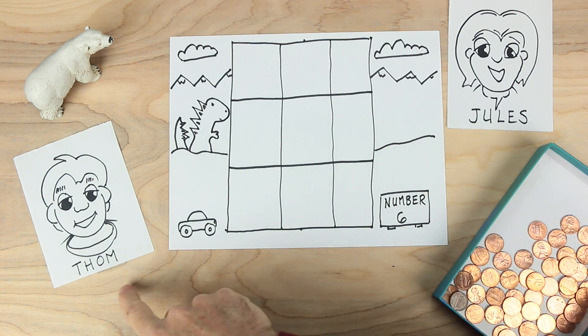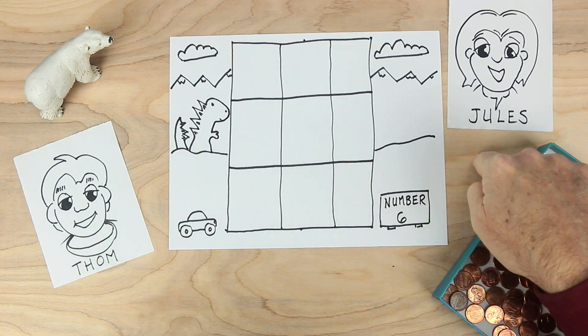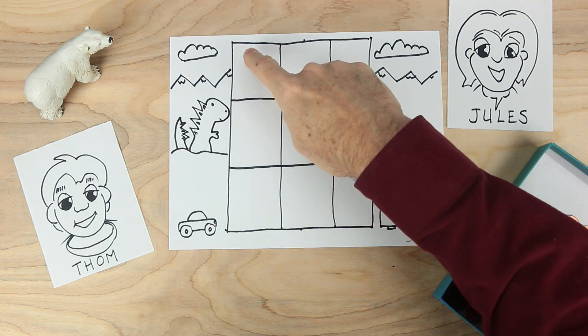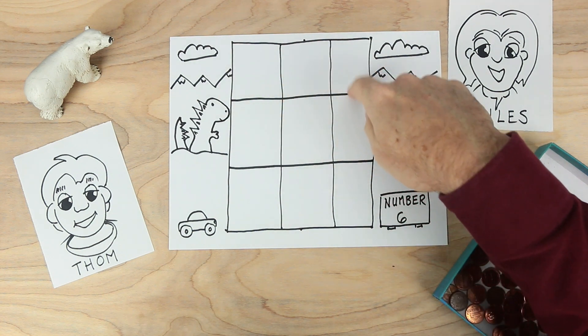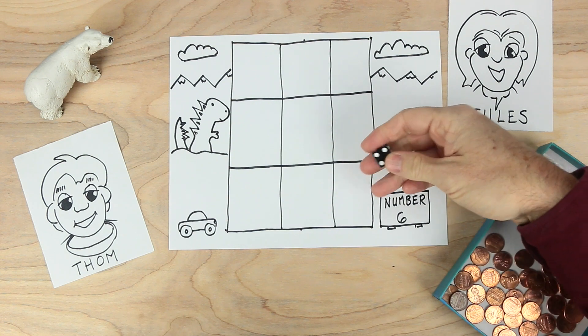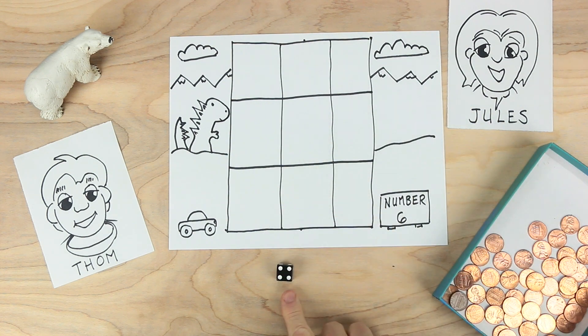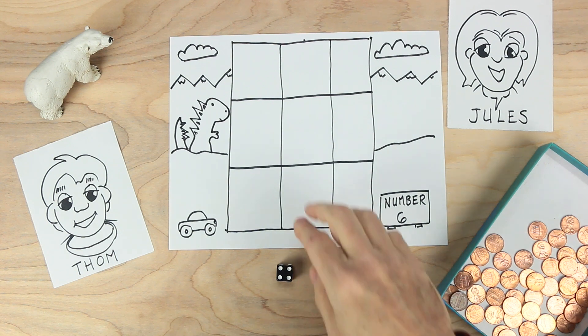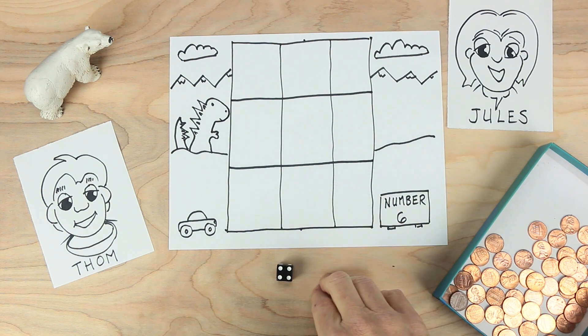We'll take turns rolling the dice. Tom will take a turn. Then Jules will take a turn. And we'll put coins out to represent the numbers filling the boxes. Now the important thing is whatever is rolled has to be played all the way. So if four is rolled, then four coins have to be put out on the board and they cannot be spilled over into any other box. Let's play to see how it works.